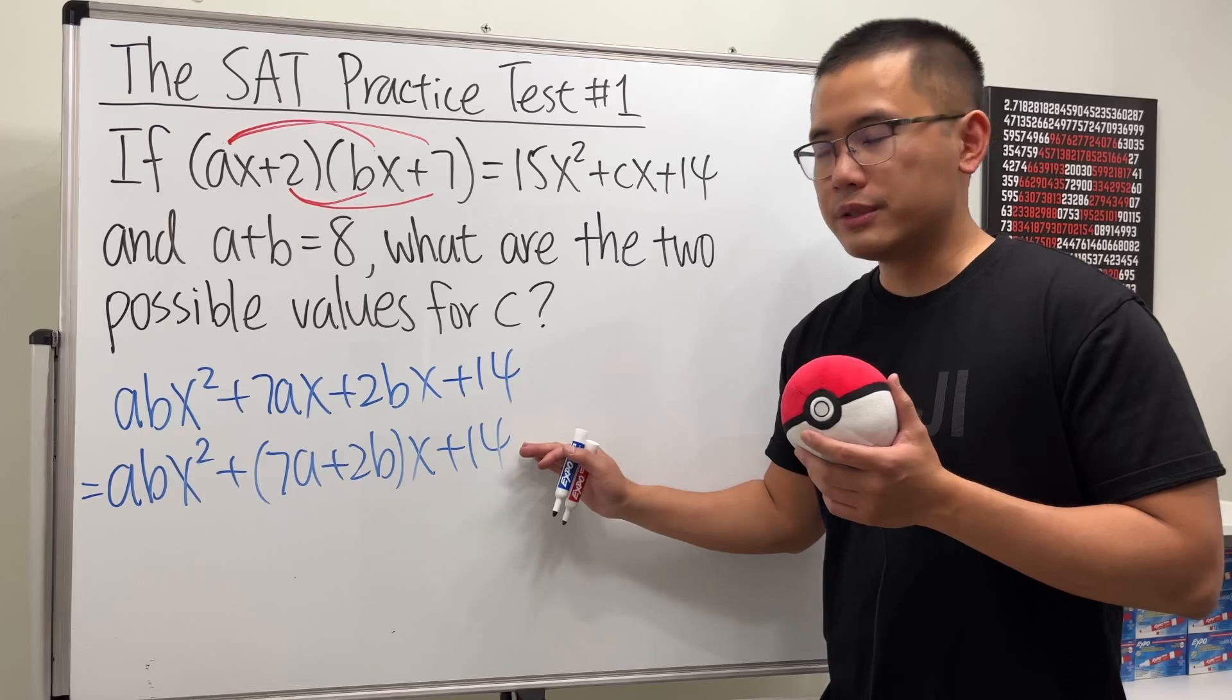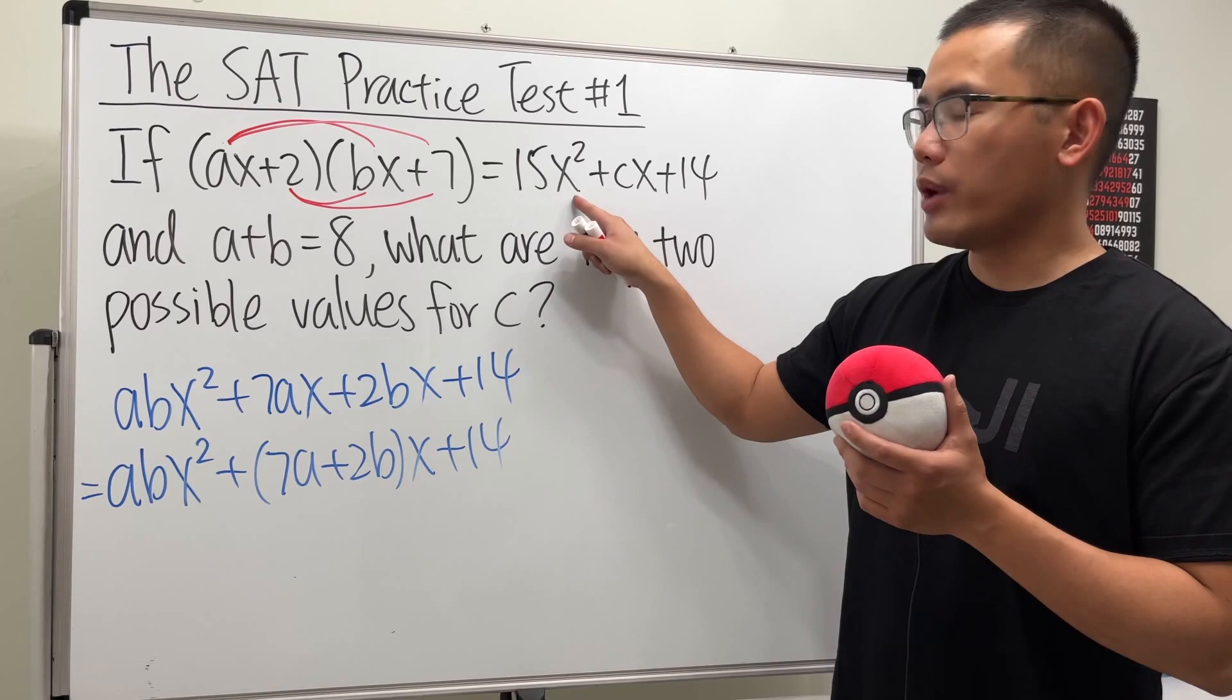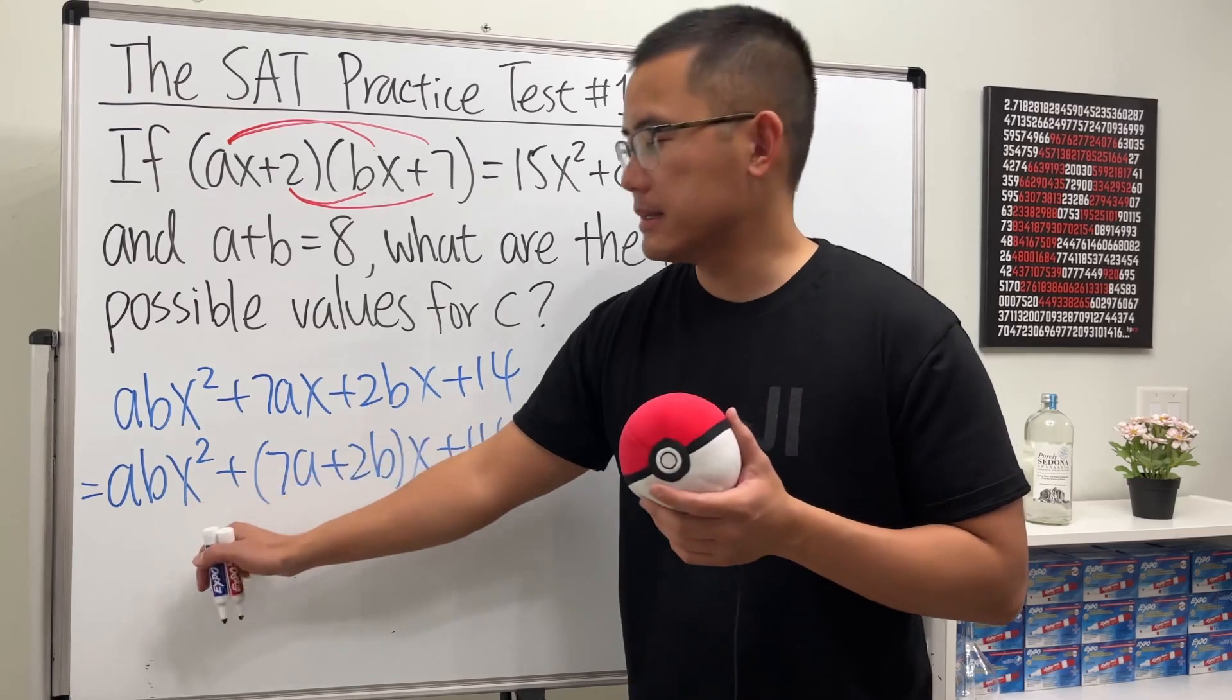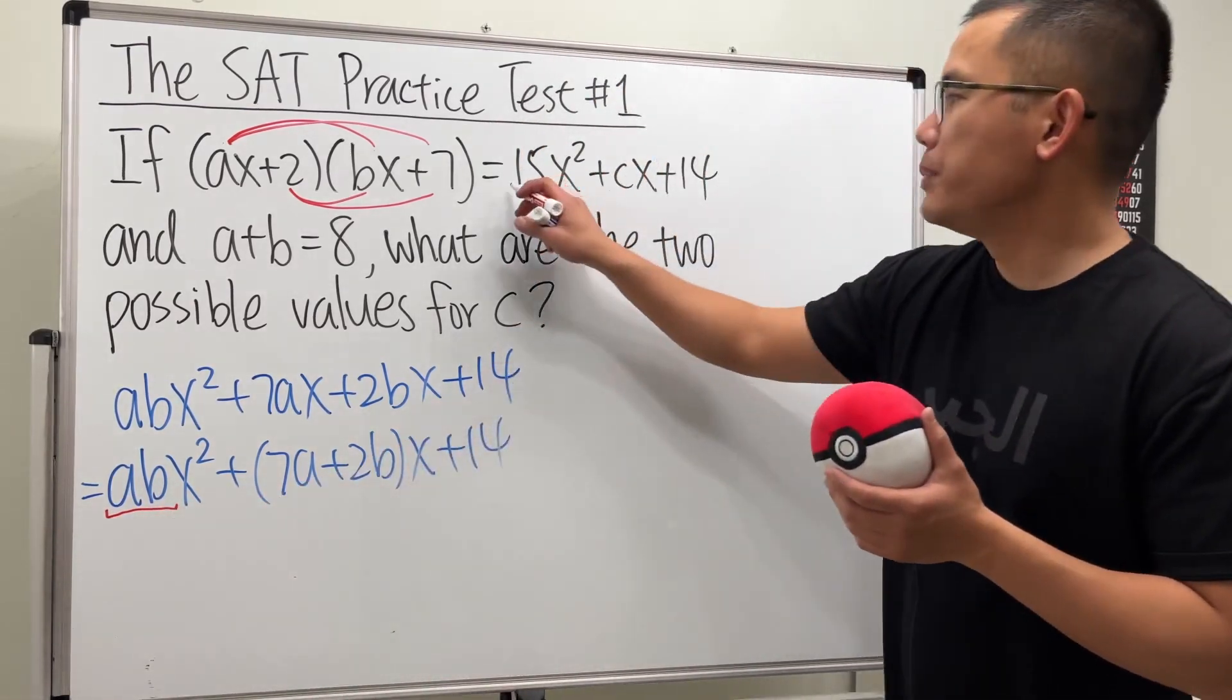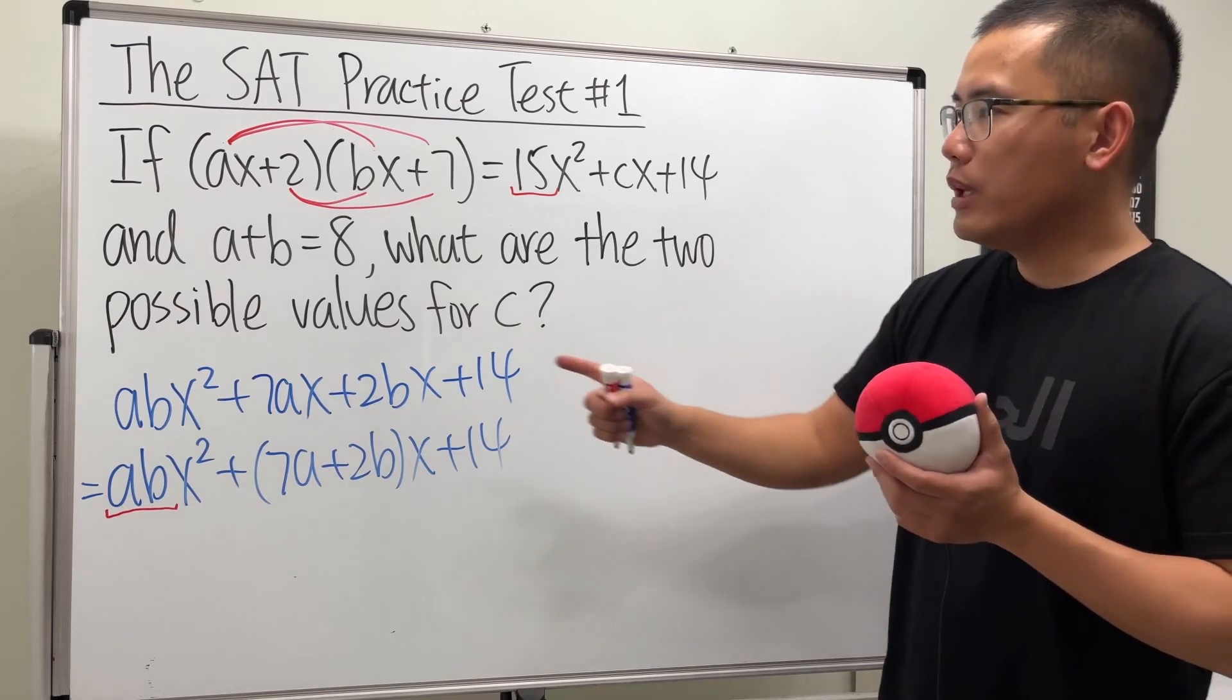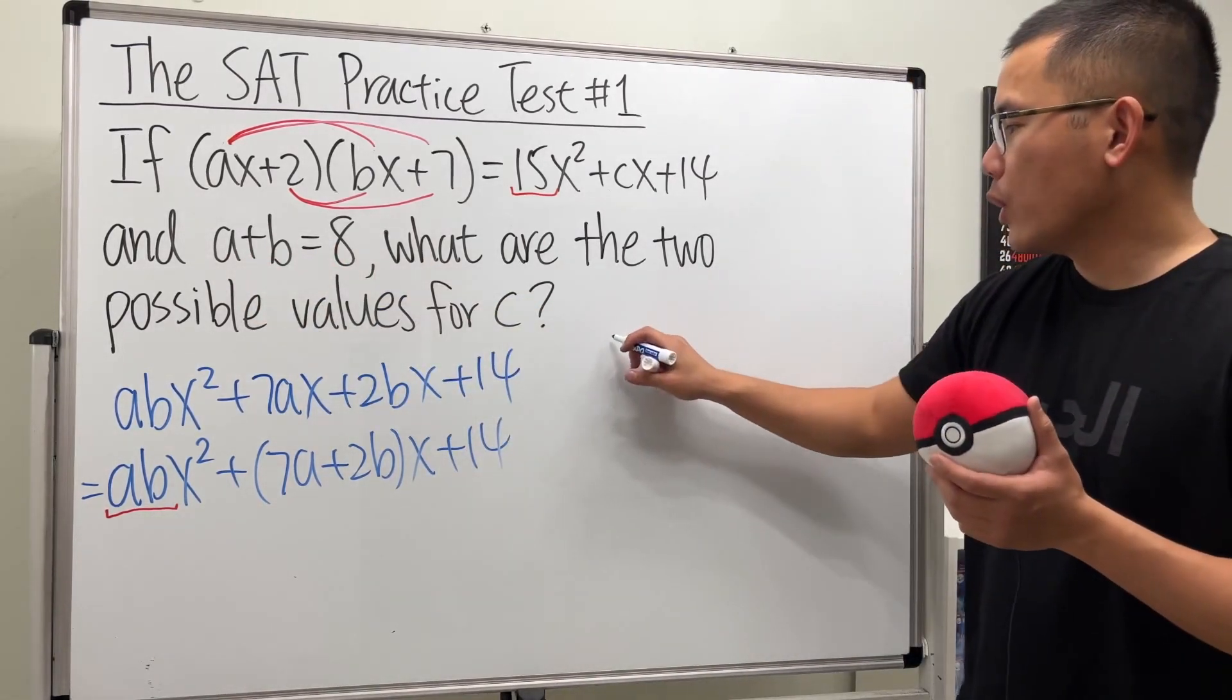And now we'll have to just take a look at the right-hand side. We see that this is going to be 15x². Well, on the left-hand side is abx². So that means the coefficient of x², which is ab, has to be the coefficient of x² right here, which is 15. And in the meantime, we are also given that a+b is equal to 8. So this is what we need to happen.